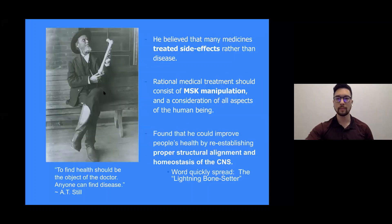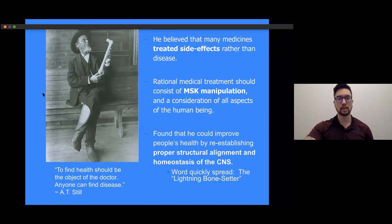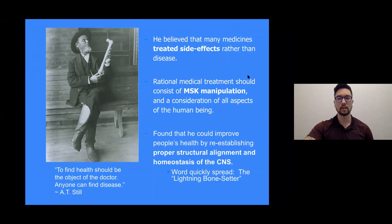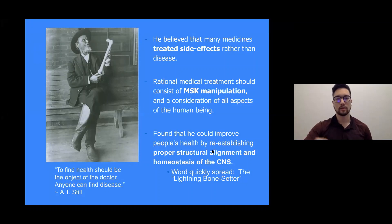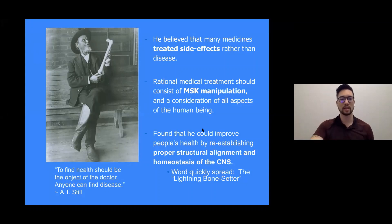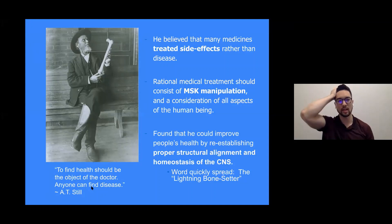He wanted to figure out a better, more natural way to heal the body. He believed that many of these medicines were treating side effects and creating side effects rather than treating the disease. He thought that a rational medical treatment should consist of musculoskeletal manipulation and consider aspects of all things the human being is comprised of — the mind, body, and spirit. He found he could improve the central nervous system homeostasis via muscular manipulation. He was quickly well known for this, being called the 'lightning bone setter.' One of his top quotes: 'To find health should be the object of the doctor. Anyone can find the disease.'